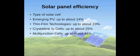Efficiency also depends on the type of solar cell. Emerging PV converts up to about 14% of the sunlight into electricity. Thin film technologies up to about 20%. Crystalline Si cells up to about 25%, and multijunction cells up to about 44%. The data comes from the National Renewable Energy Laboratory.